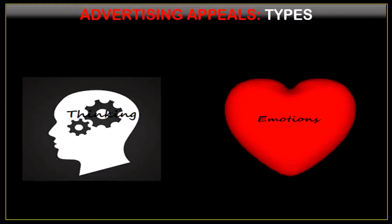In case of logical appeal, an advertiser tries to sell the product based on its performance, features, or its ability to solve a problem. On the other hand, in case of emotional appeal, an advertiser attempts to sell a product based on the satisfaction that comes from purchasing and then owning or giving that product as a gift. On screen, two print ads are shown — the first uses logical advertising appeal and the second uses emotional advertising appeal.